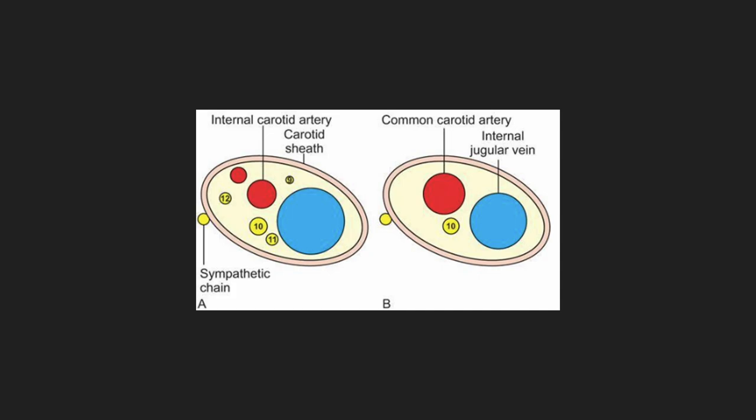These are the diagrammatic representations of axial sections of the carotid space at the level of suprahyoid and infrahyoid neck. At the suprahyoid neck we have the internal carotid artery, internal jugular vein, and cranial nerves 9, 10, 11 and 12, along with the sympathetic plexus which is seen lying outside the carotid sheath. At the infrahyoid level we have the common carotid artery, internal jugular vein and vagus nerve as its contents.